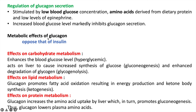The metabolic effect of glucagon is just opposite to the action of insulin. Insulin enhances absorption of glucose from the bloodstream into cells, reducing blood glucose concentration, whereas glucagon does the opposite. In carbohydrate metabolism, glucagon enhances blood glucose level, which is called hyperglycemia. Glucagon increases synthesis of glucose in the liver, called gluconeogenesis, and enhances degradation of glycogen, called glycogenolysis.